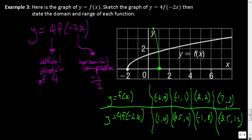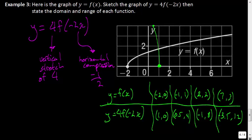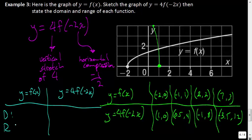The last thing we were asked to do is discuss domain and range. We have y = f(x) and y = 4f(−2x). For the domain of the original function, x had to be greater than or equal to negative 2. How has that changed for our new function? Our new function has values at 1 and they're going in the other direction — less than or equal to 1.